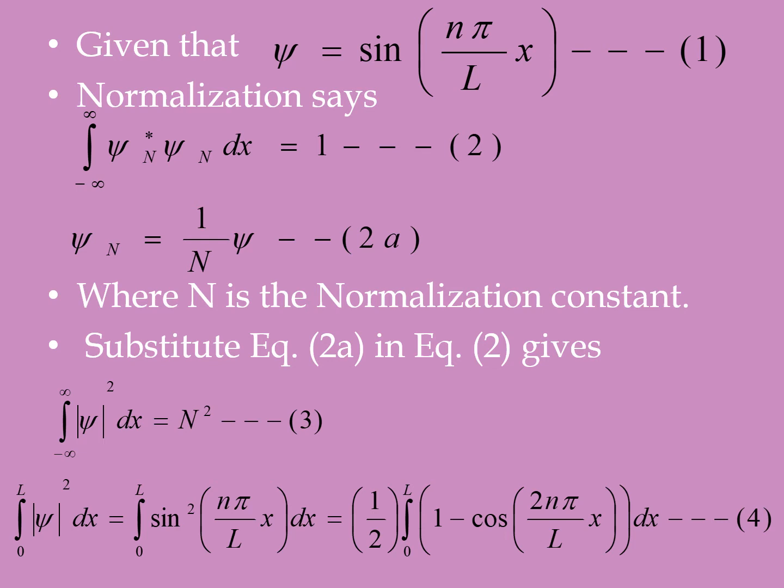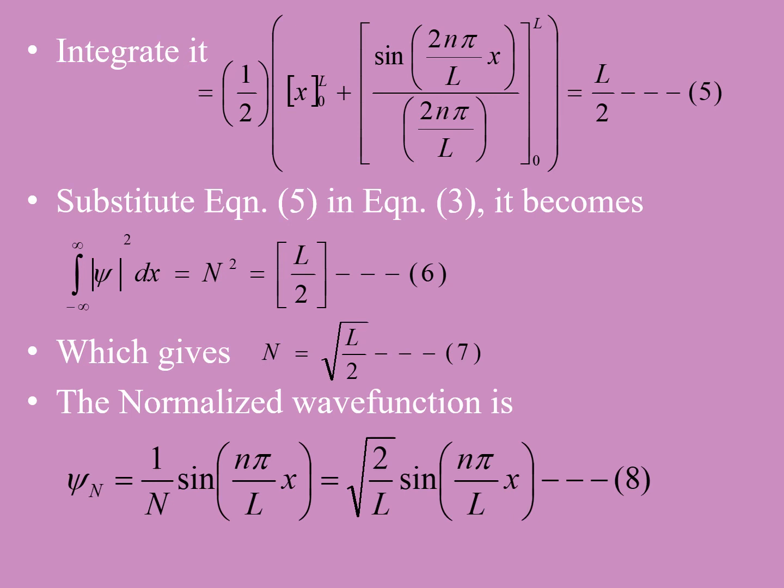So it becomes (1/2) times the integral from 0 to L of [1 - cos(2nπx/L)] dx. Integrating, this gives (1/2) times [x + sin(2nπx/L) / (2nπ/L)] evaluated from 0 to L. After substituting the limits, the first term becomes L/2 and the second term equals 0, giving a result of L/2.